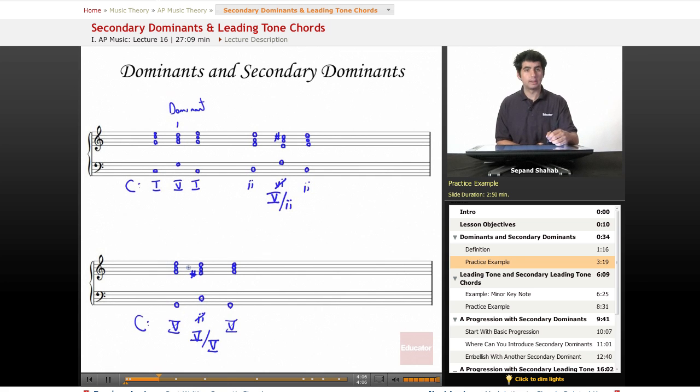And these chords can also be used in inversion, so the same V of V can be in first inversion. So V, and it's labeled accordingly, V6 of V, V. And remember to use the altered tone, so G, F sharp, G. And I'll write in the rest of the progression. G, B, D. And then F sharp, D, A, D. Back to G, B, D.